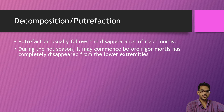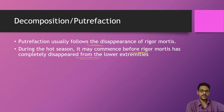Putrefaction usually follows the disappearance of rigor mortis. Rigor mortis takes up to 24 hours to disappear, and putrefaction starts after that. During hot seasons, it may commence before rigor mortis has completely disappeared from the lower extremities — even if rigor mortis is still present there, microorganisms may start activity in hot seasons.